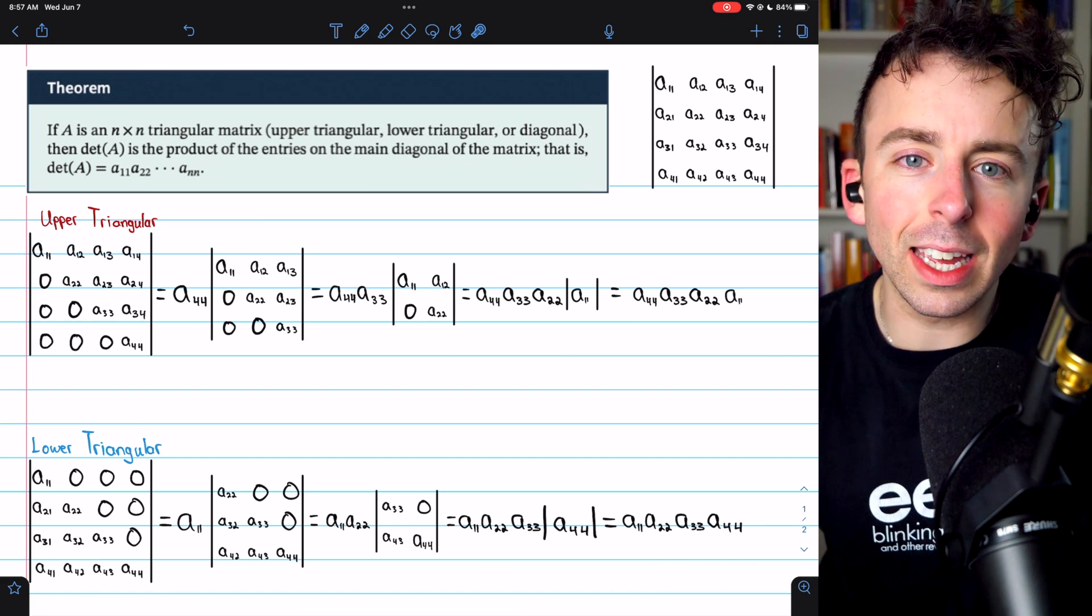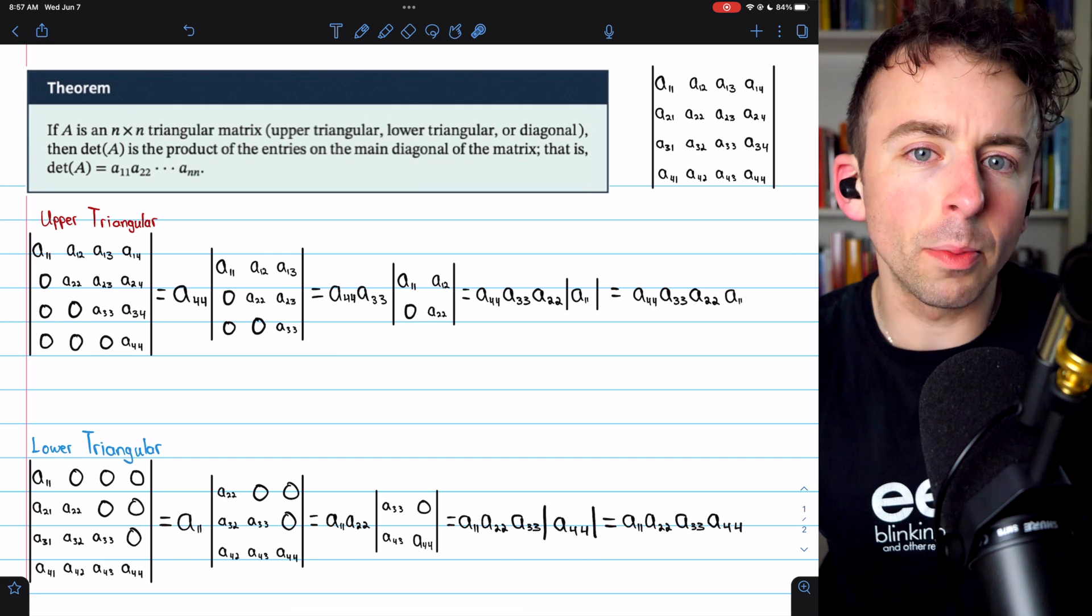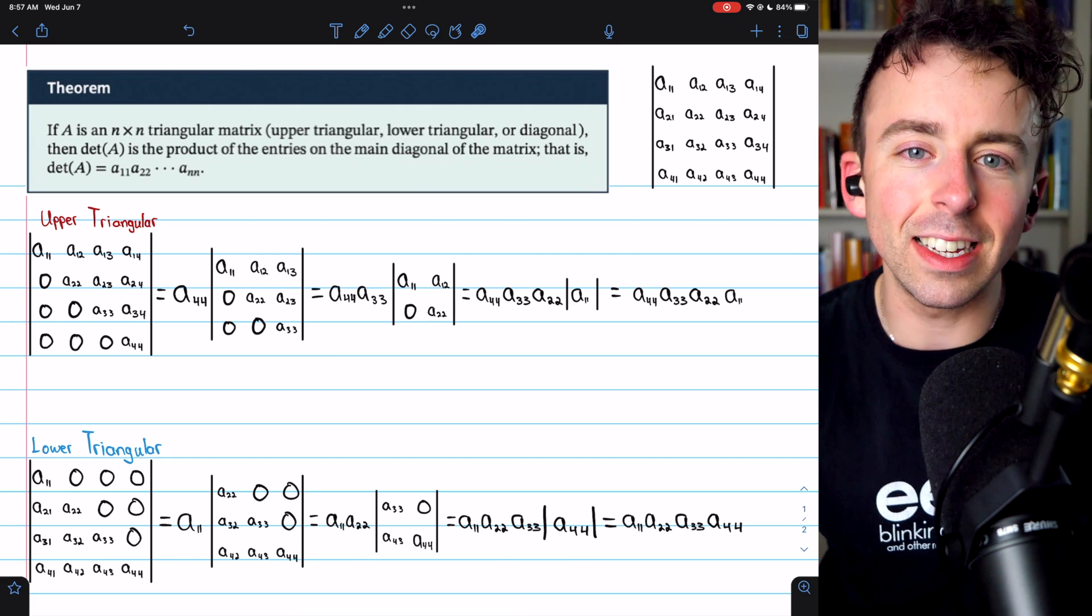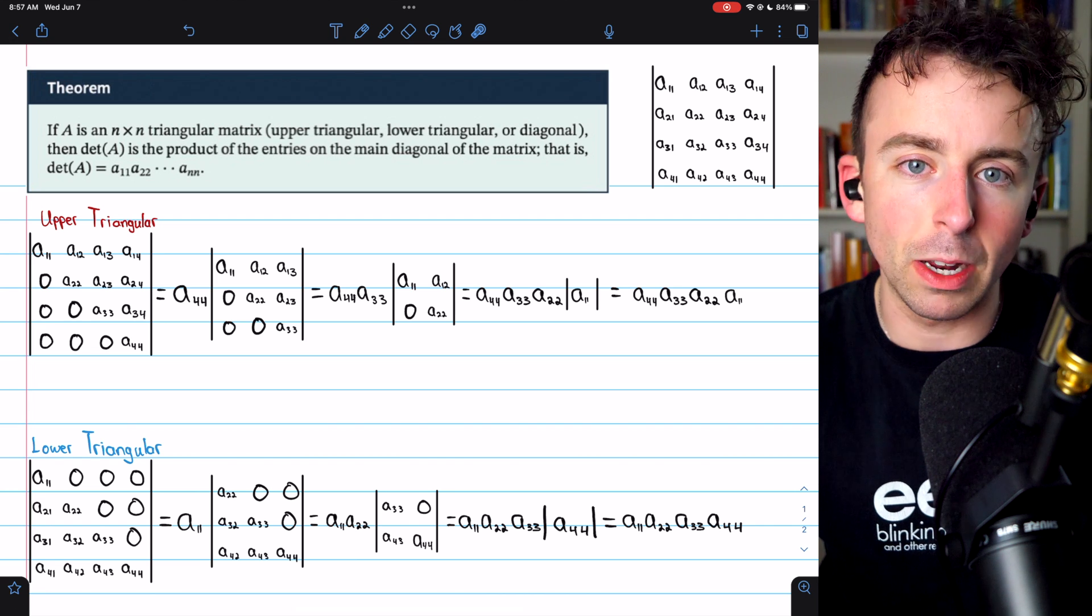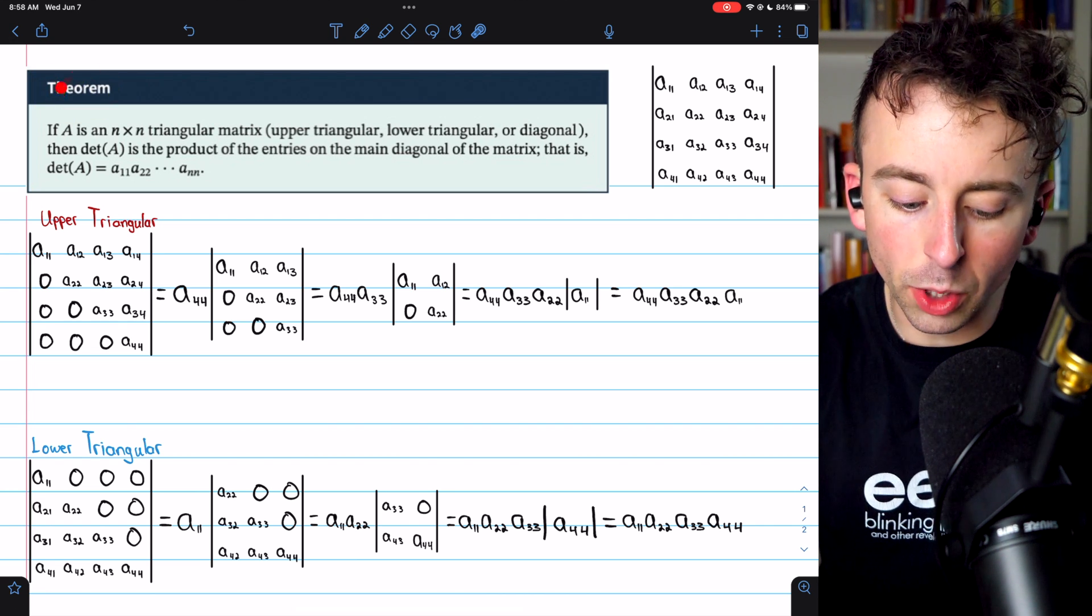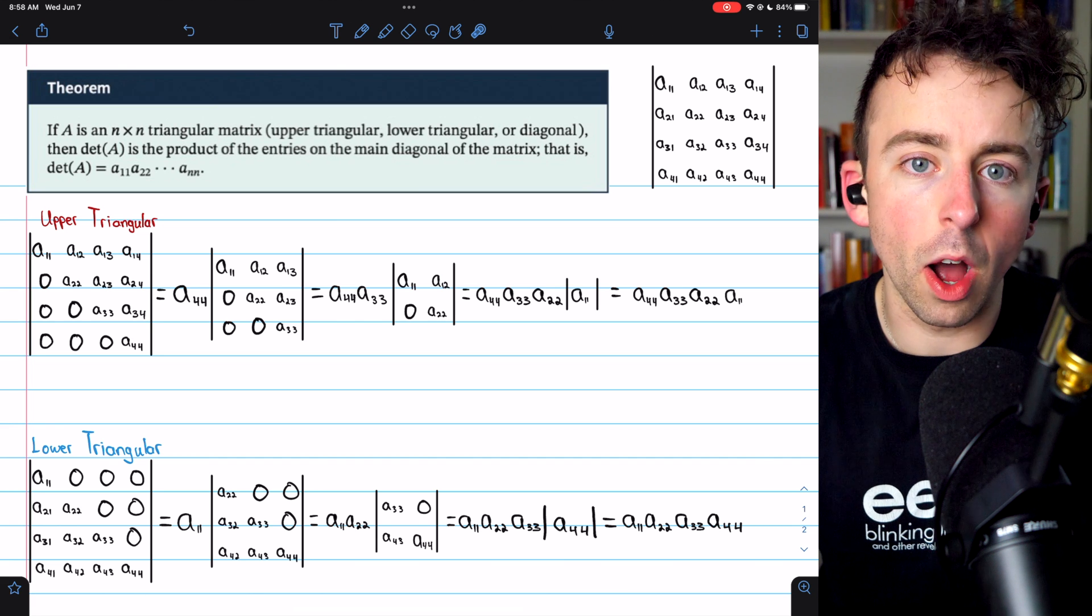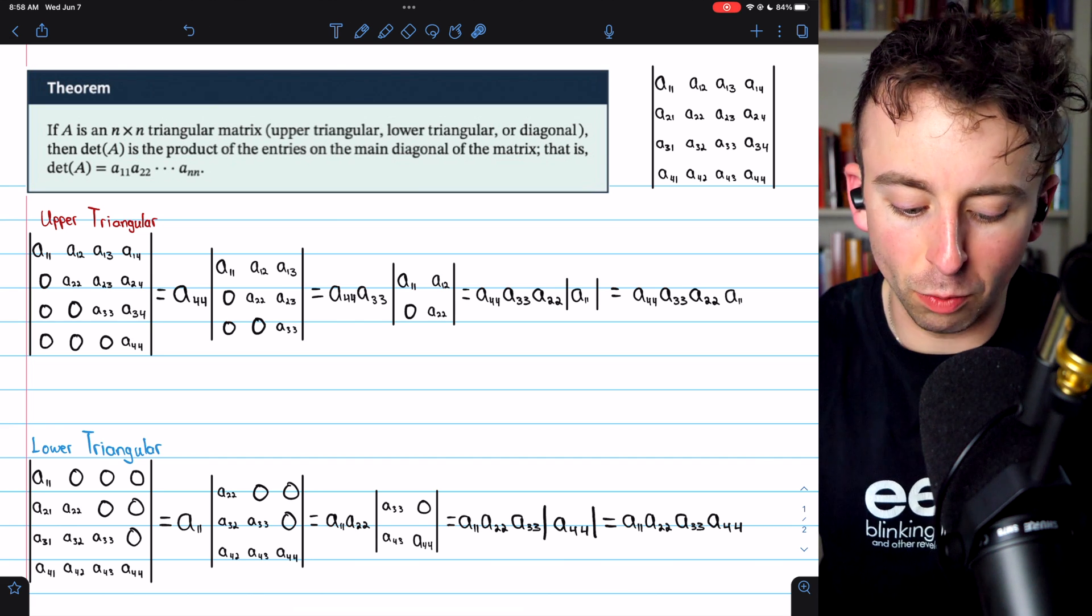Today, we'll be looking at the special case of triangular and diagonal matrices and how our definition of the determinant leads to a pretty nice, easy calculation for these matrices. Here is the theorem. We will use this when we talk about finding determinants using row operations, but for now, let's just read through this.